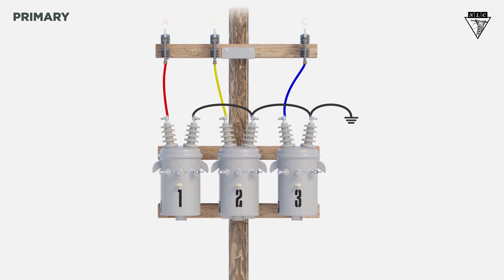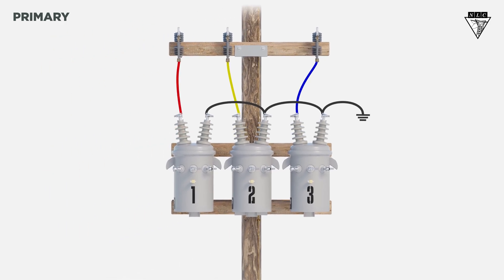Grounding the Y point creates a ground source for the primary system, which allows the use of single or dual primary bushing transformers. It's generally safer for the next line worker to work on. The decision to either ground or float the Y primary is up to the power company.